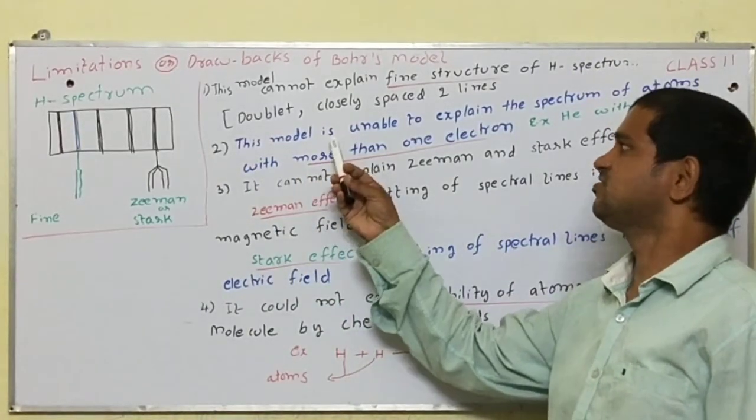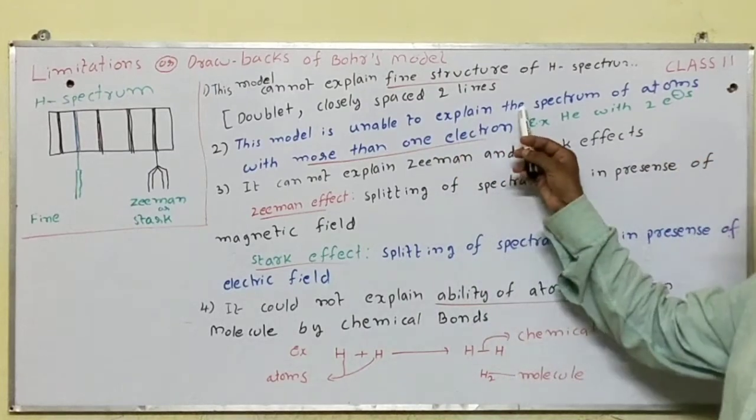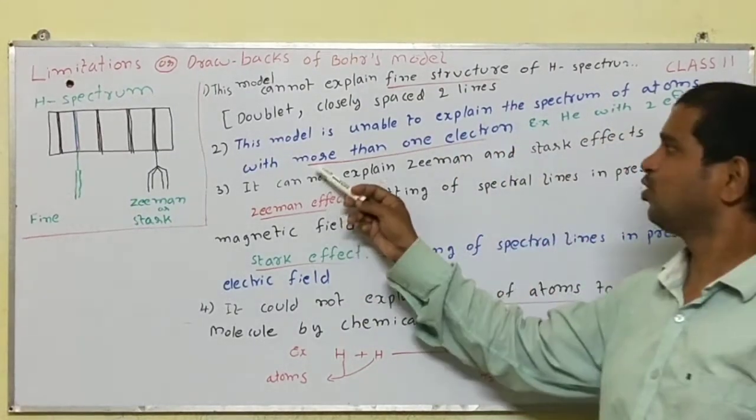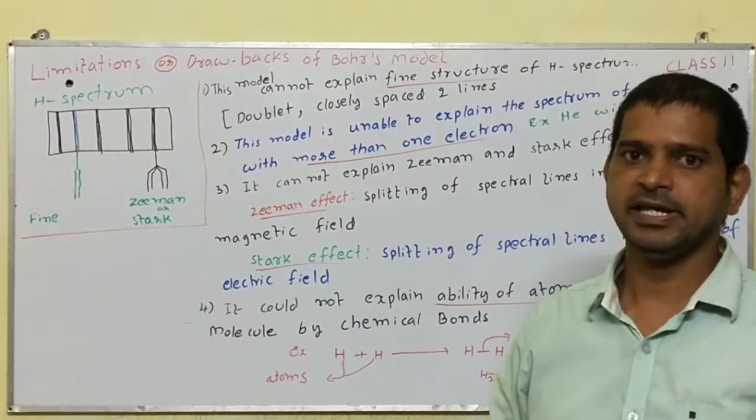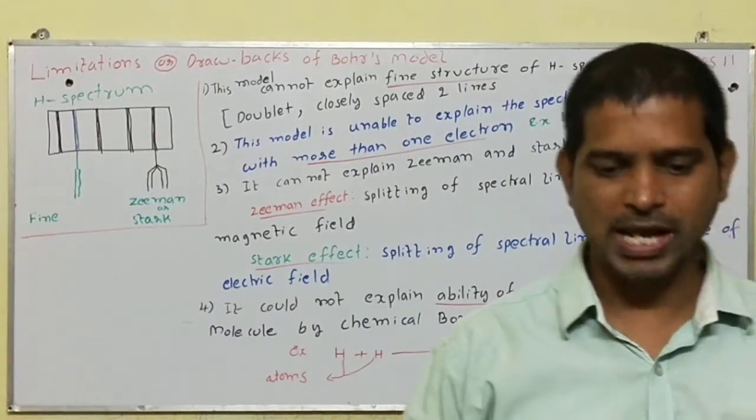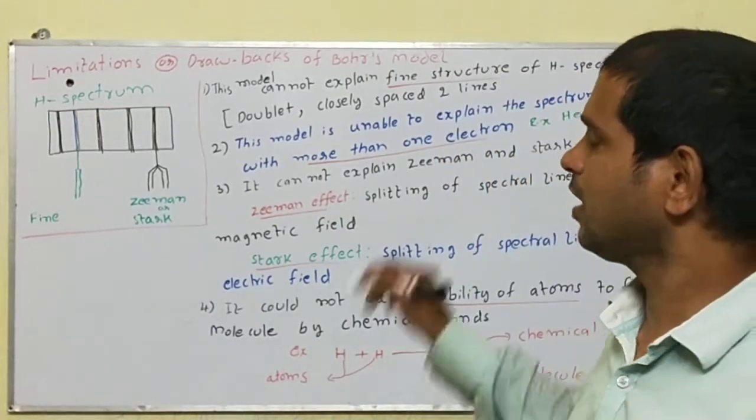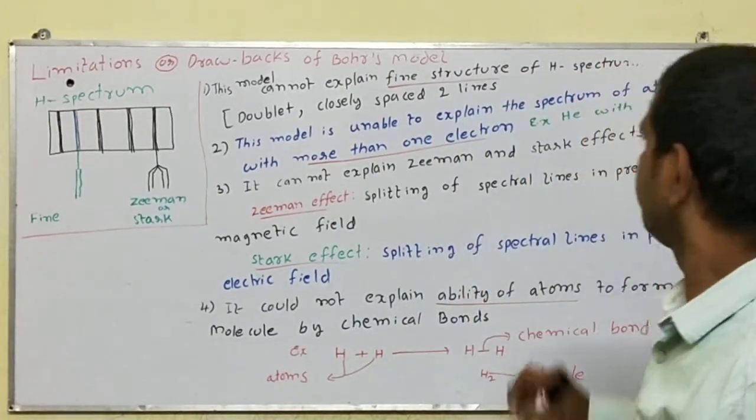The second defect is this model is unable to explain the spectrum of atoms with more than one electron. Take example helium. Helium consists of 2 electrons. The Bohr model does not explain the spectrum of helium.